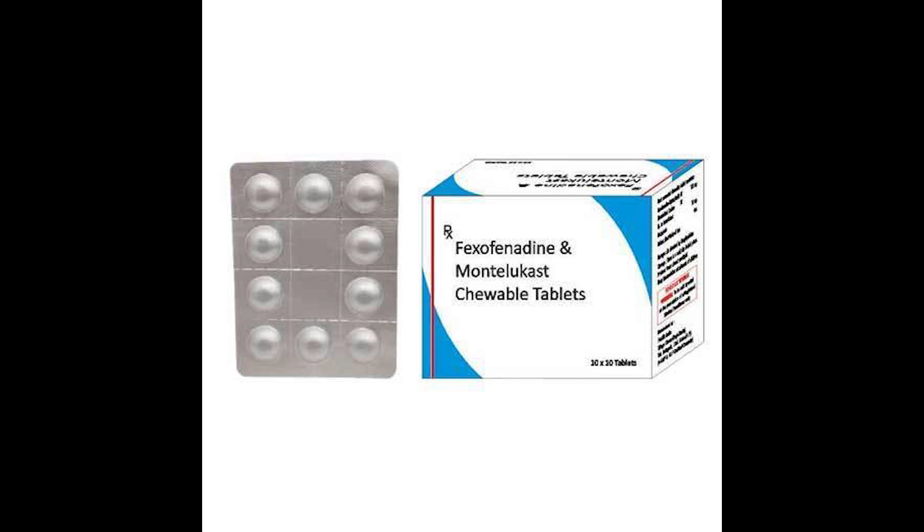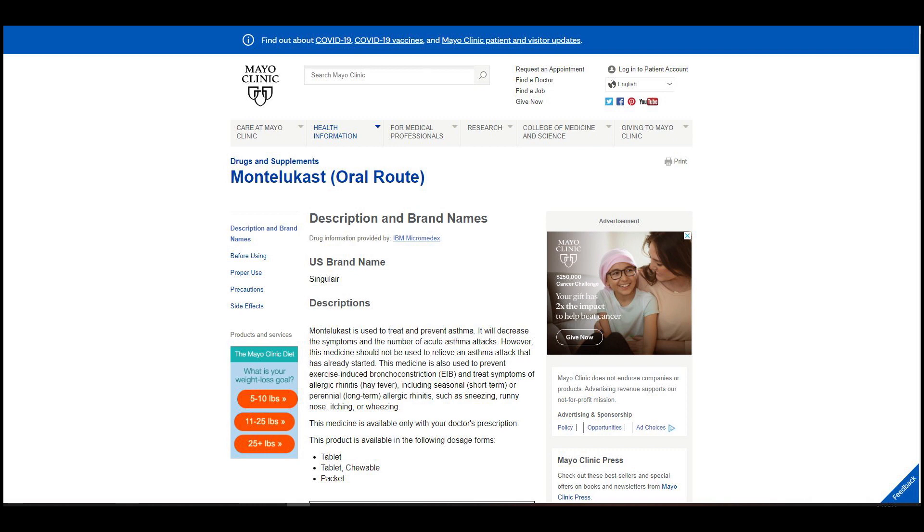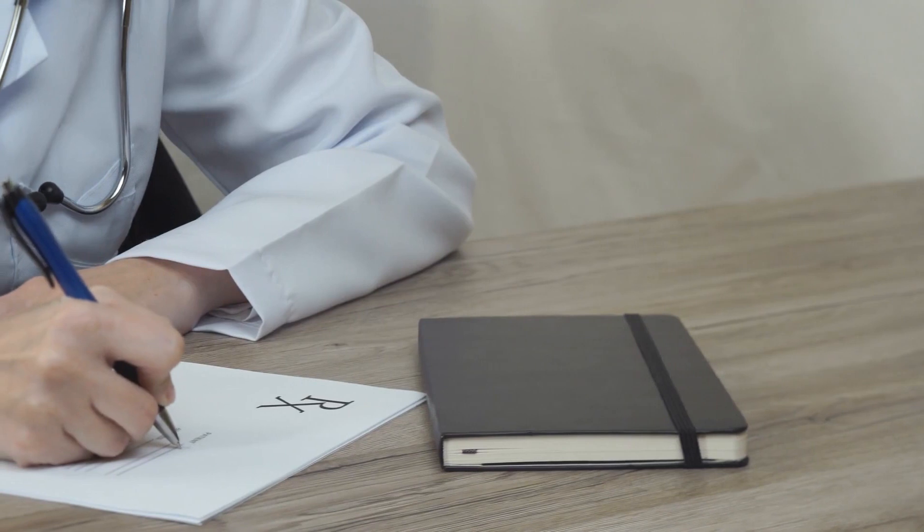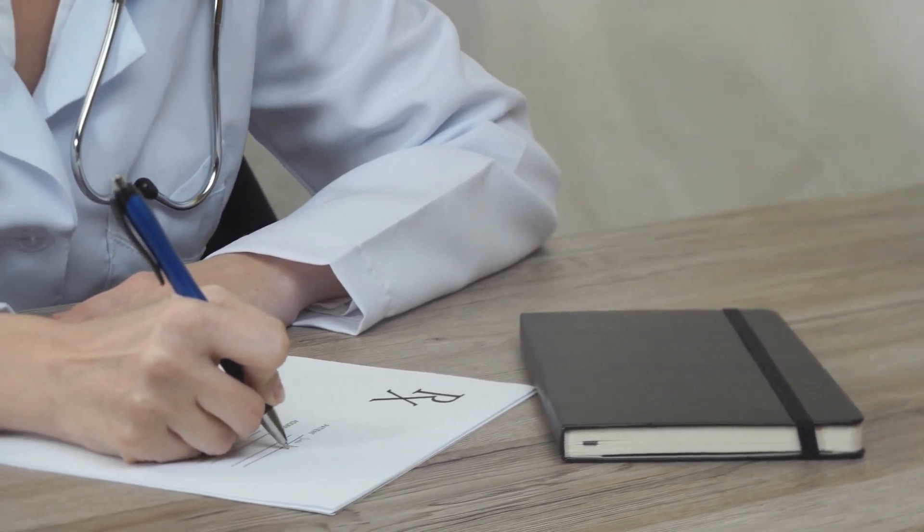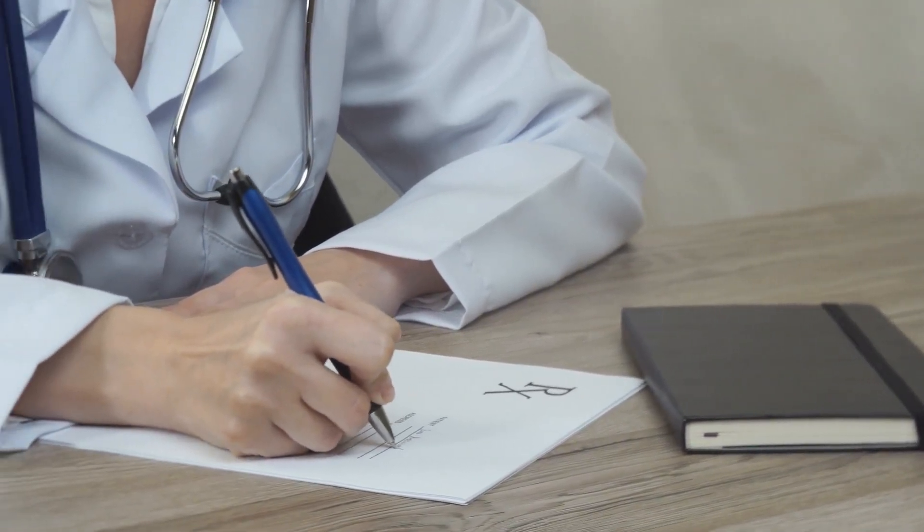Montelukast is an oral medication used to treat asthma and hives. According to the Mayo Clinic, Montelukast may prevent the number of asthma attacks and reduce asthma symptoms. However, it shouldn't be taken during an asthma attack. Doctors may also prescribe the drug for hay fever and seasonal allergic rhinitis.